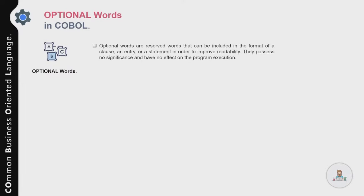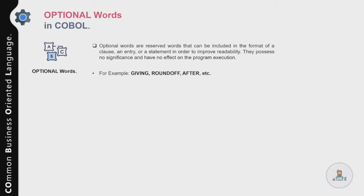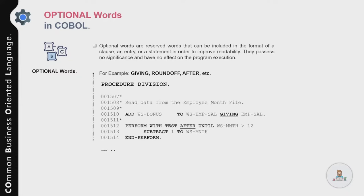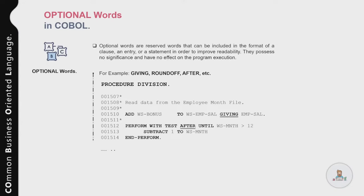Now let's talk about optional words in COBOL. Optional words are reserved words that can be included in the format of a clause, entry, or statement in order to improve the readability of the code. They have no effect on the execution of the program. Quick examples of optional words are GIVING, ROUNDED, OFF, and AFTER.